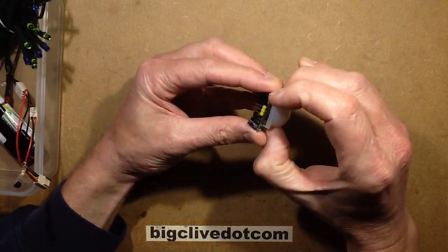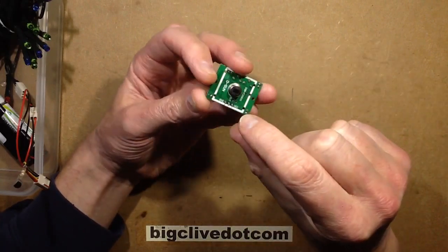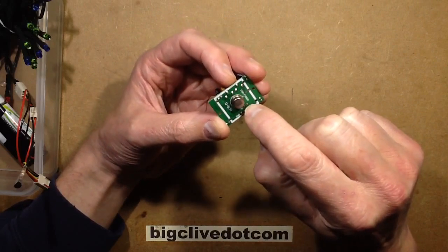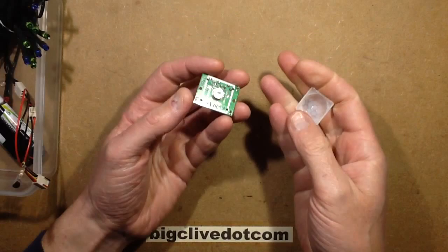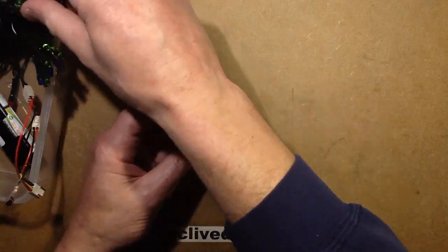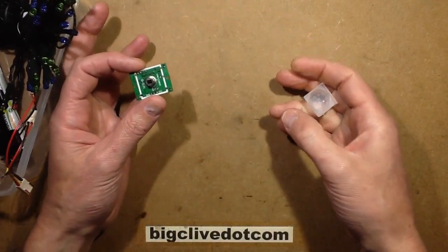Interestingly, they have a facility on a lot of them for adding a couple of extra pads for a light sensor. Because as standard it will just operate day and night. If you're controlling Christmas lights maybe that's not a bad thing.